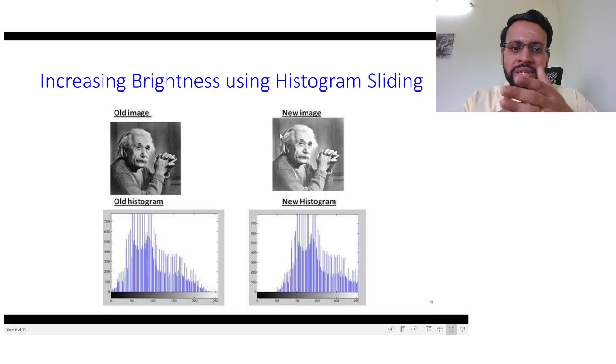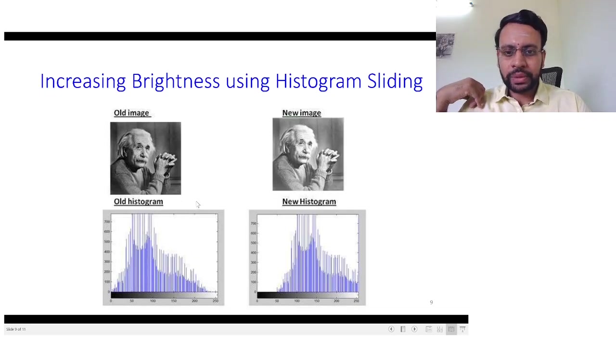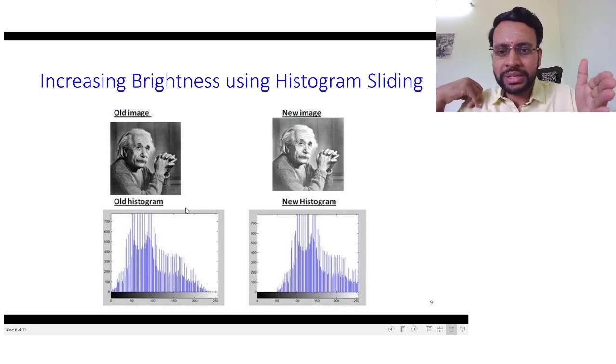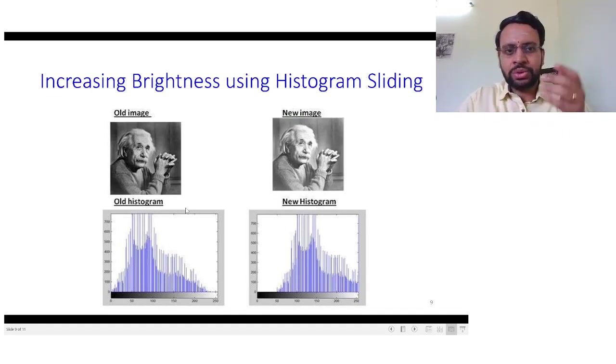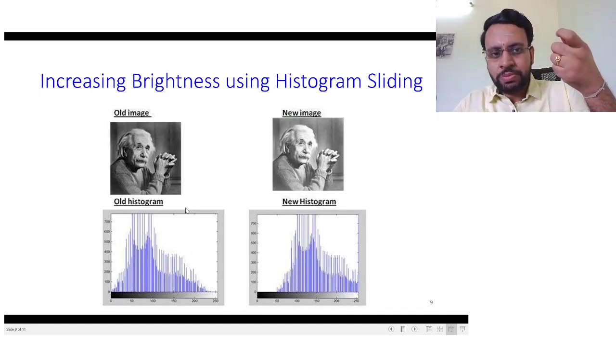Here is an example for illustrating this. We will see Einstein in almost all these examples. You could notice here that there is a gap here, right? So there are no intensities on the high end. Let's say from maybe the last 50 intensity values are not present. So in that case, once you could see it from the histogram, all you could do is a simple shift of intensity.